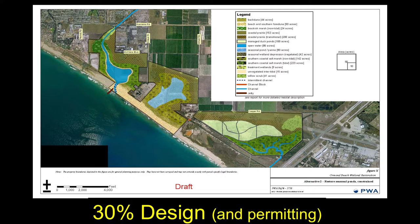Associated with this, we have to get all the permits — not trivially. The 30% design will tell us what permits we need, and in some cases that means we can go forward, or in some cases, oh my god, these guys are never going to give us this kind of permit. So the end of the 30% design might be that the project goes on indefinite hold because the rough estimate is a hundred million dollars with no way of getting that.